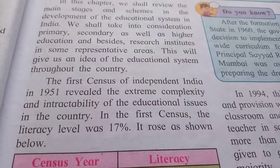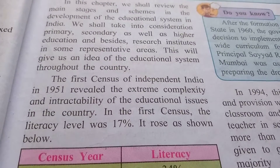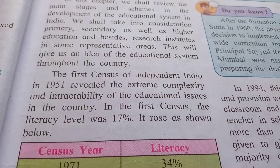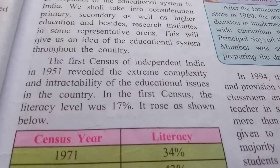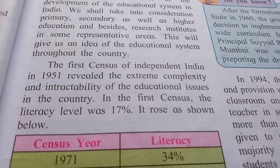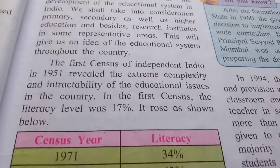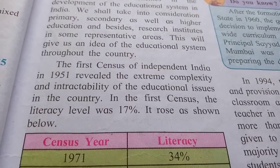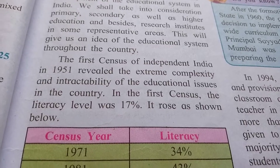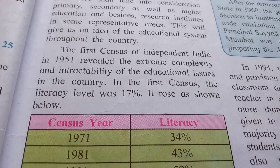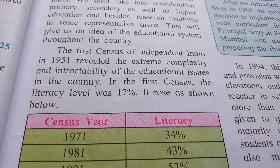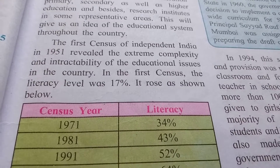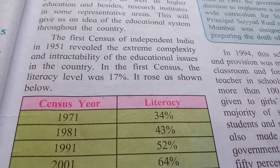The first census of independent India in 1951 revealed the extreme complexity and the intractability of the educational issues in the country. In the first census, the literacy level was 17% as shown.